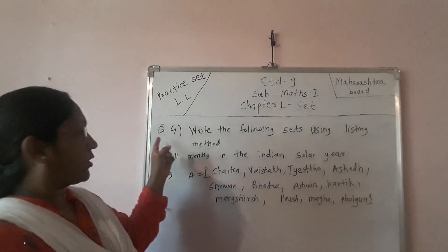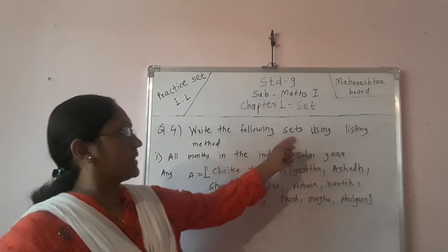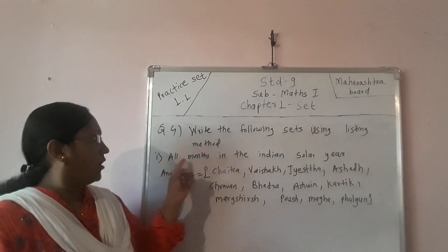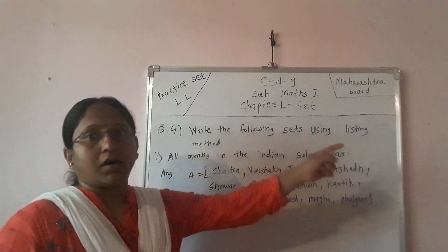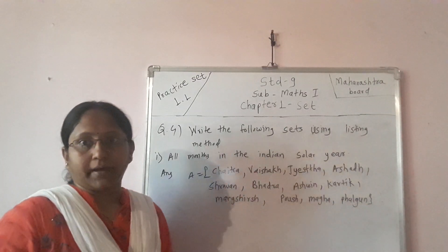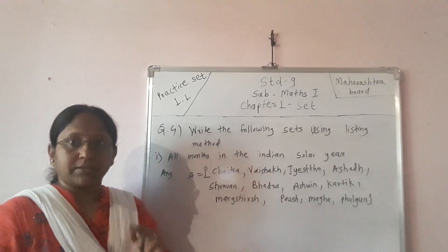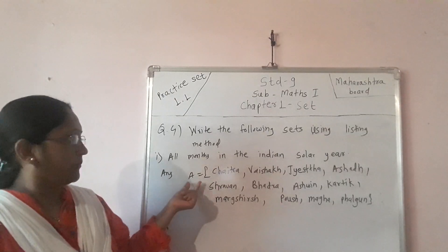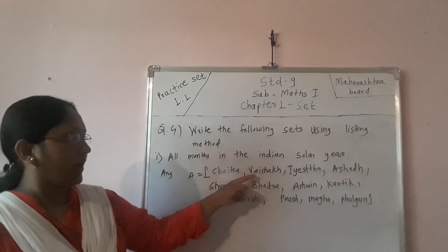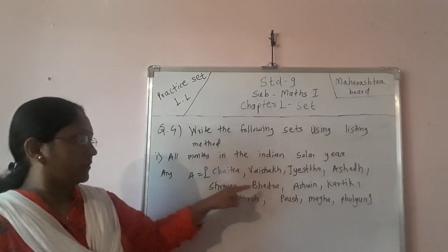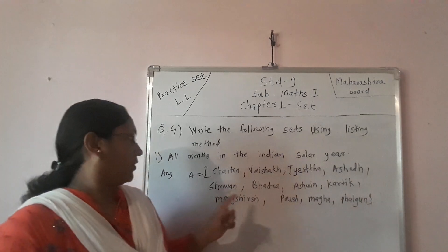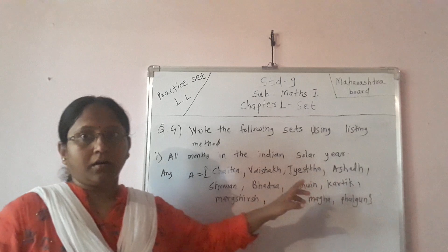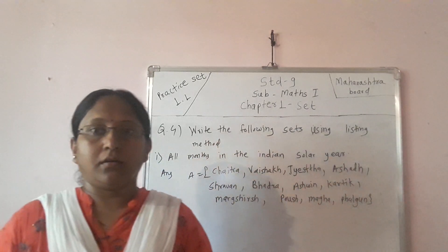Next, question number four: write the following sets using listing method. The first sub-question is all months in the Indian solar year. We know the Indian solar year has 12 months, starting from Chaitra. So I declare the set as A, and A = {Chaitra, Vaishakh, Jyeshtha, Ashadha, Shravan, Bhadrapad, Ashwin, Kartik, Margashirsha, Poush, Magh, Falgun}. These are the months in the Indian solar year.